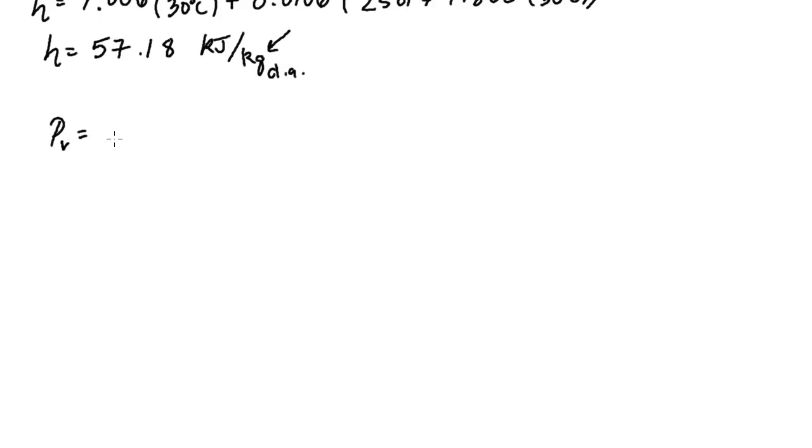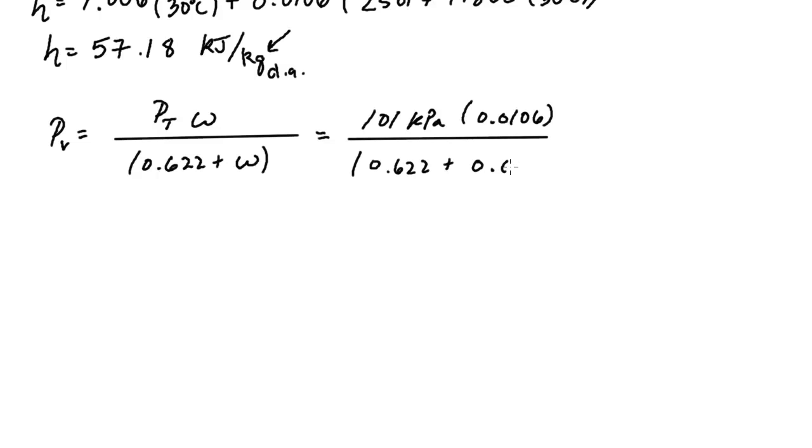Okay, we are in the home stretch. We want the partial pressure of the water vapor, and that is equal to the total pressure times the specific humidity ratio. So let me put numbers in slots, as I like to say. And we can do this, we'll say 101 kilopascals times 0.0106 divided by 0.622 plus 0.0106. You do this, and our partial pressure of the water vapor in our actual sample is around 1.69 kilopascals.